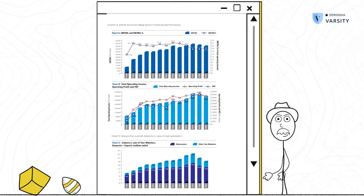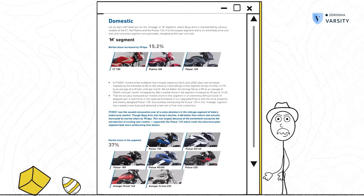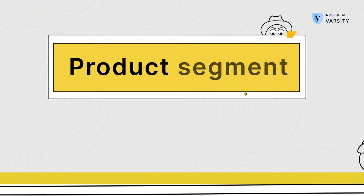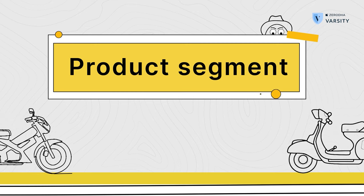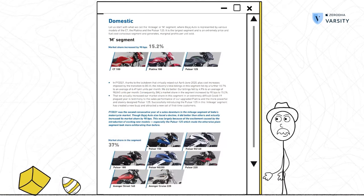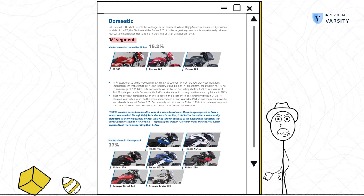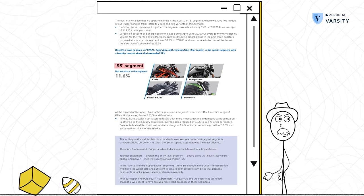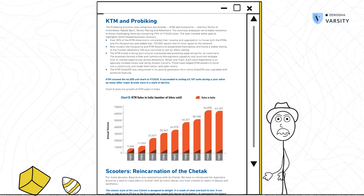The company discusses the various products it manufactures — bikes in this case — and also helps us understand the different segment classifications. As you can see, Bajaj Auto has an M segment which stands for the mileage segment, an SS segment which stands for the super sport segment, and it also has the KTM and pro biking segment.